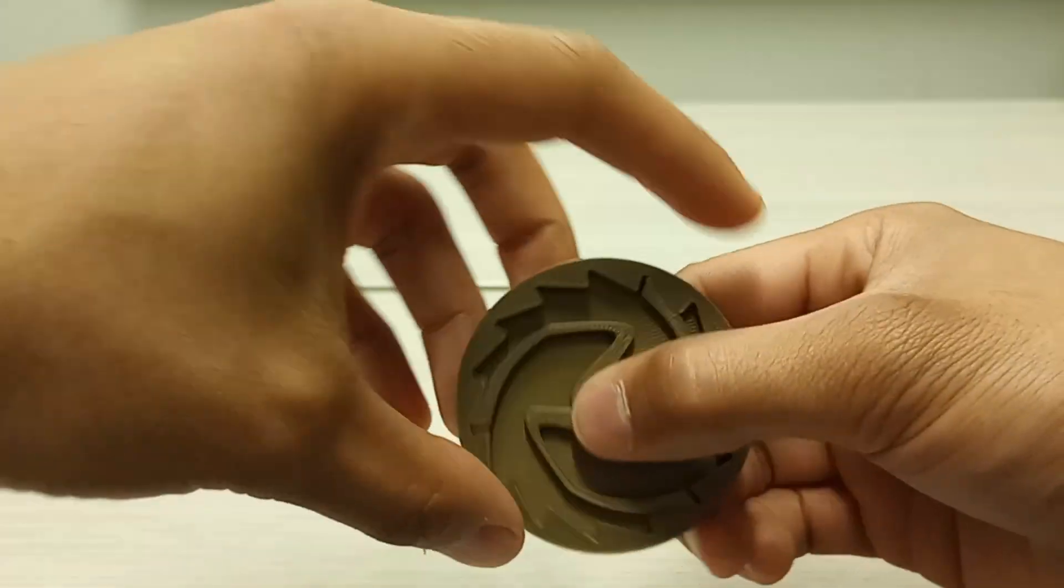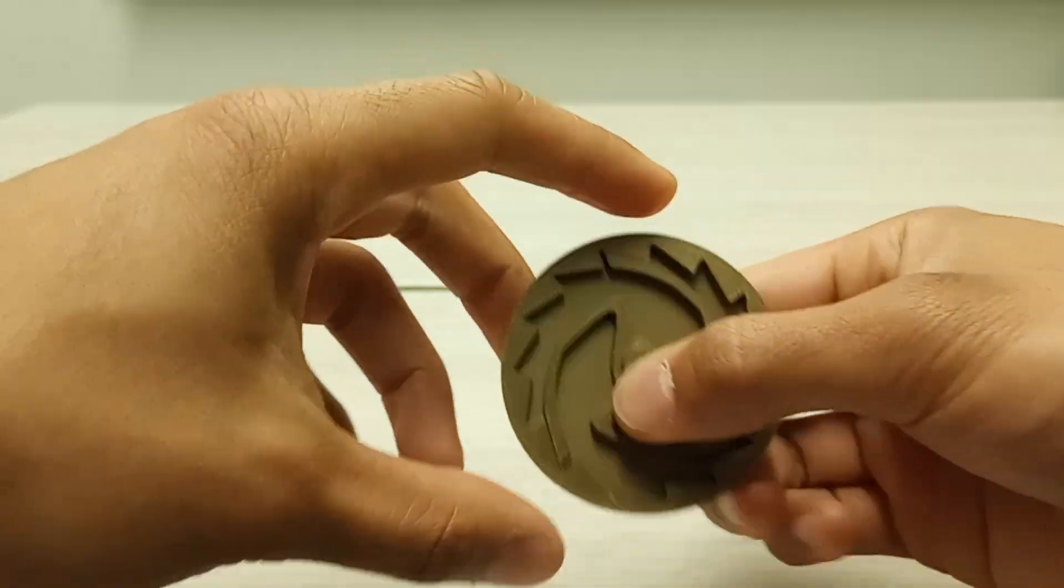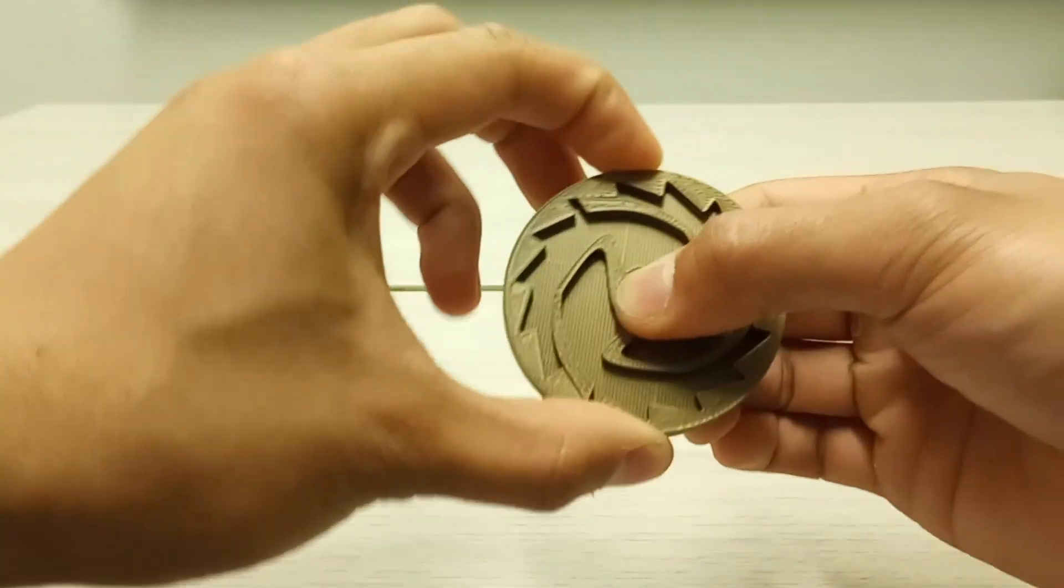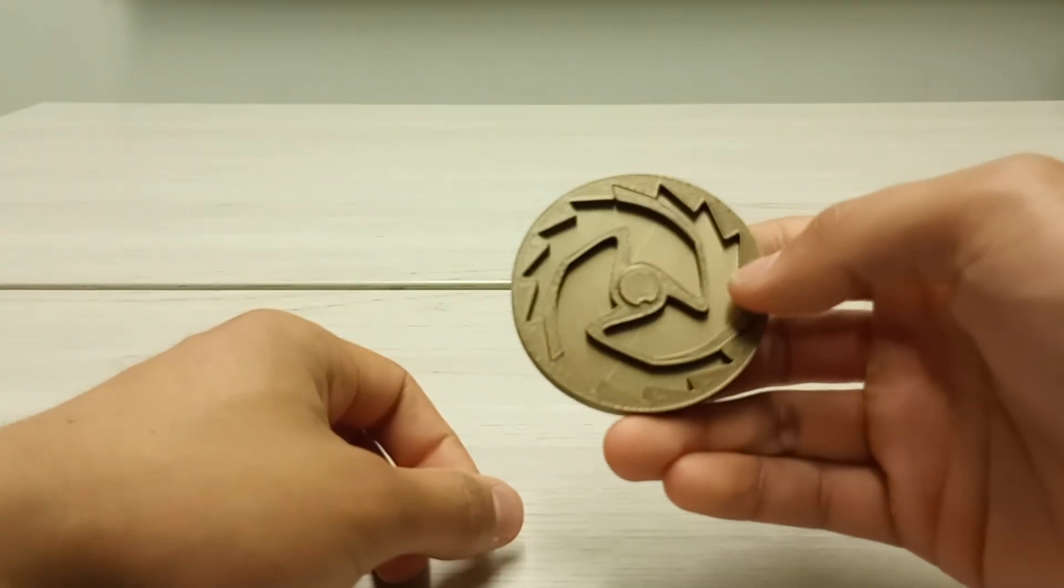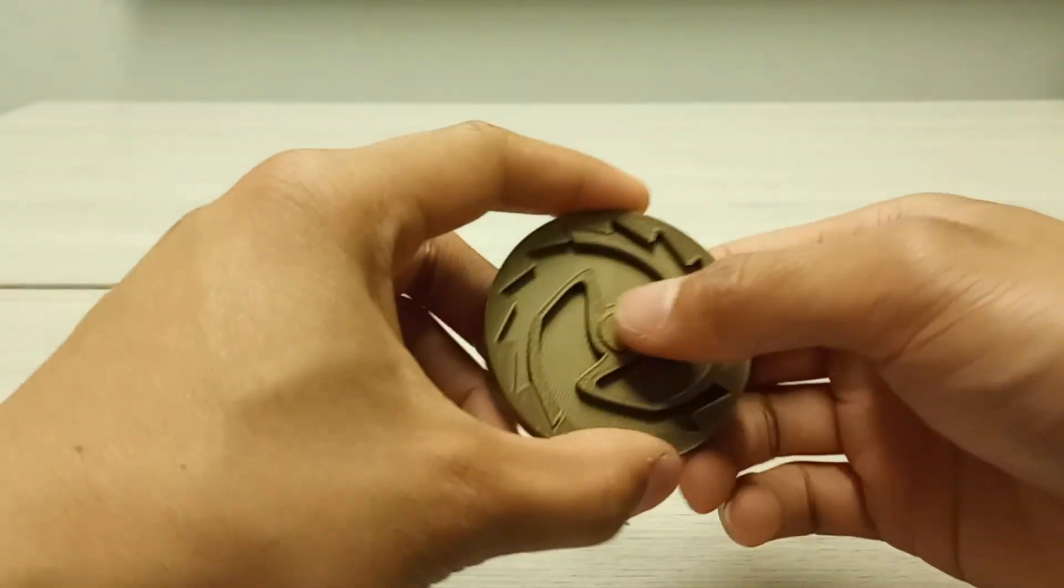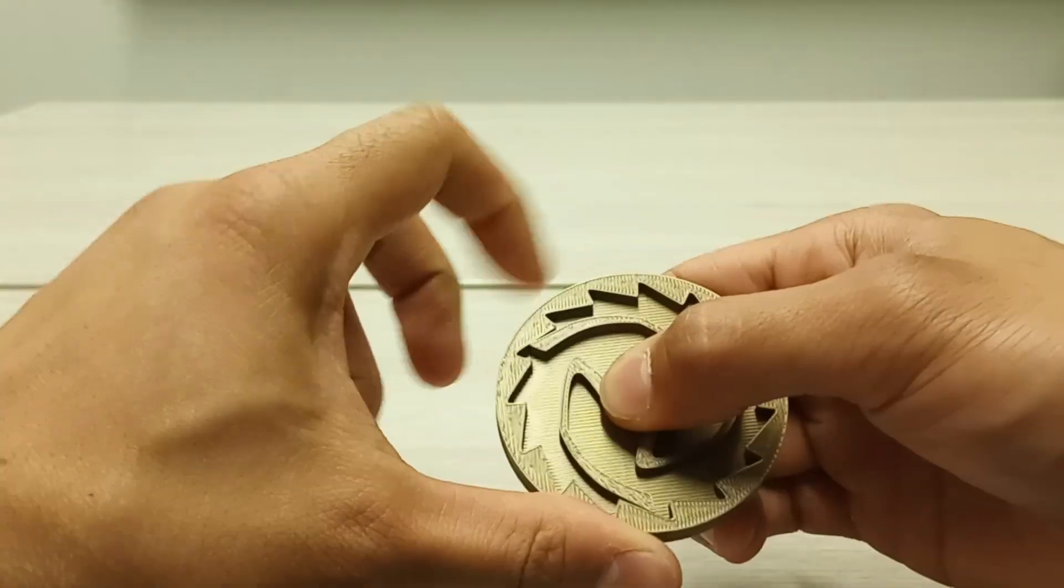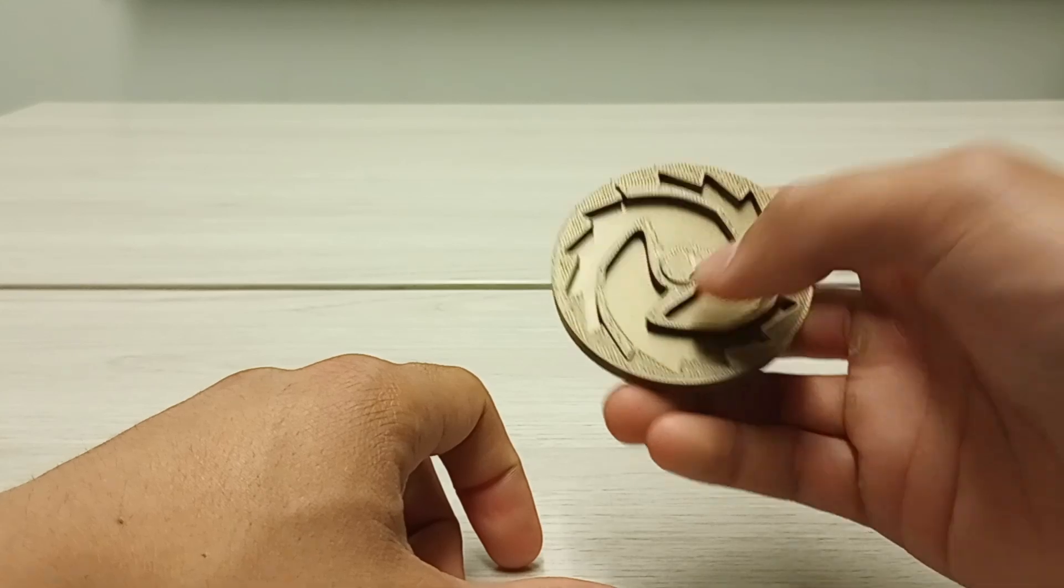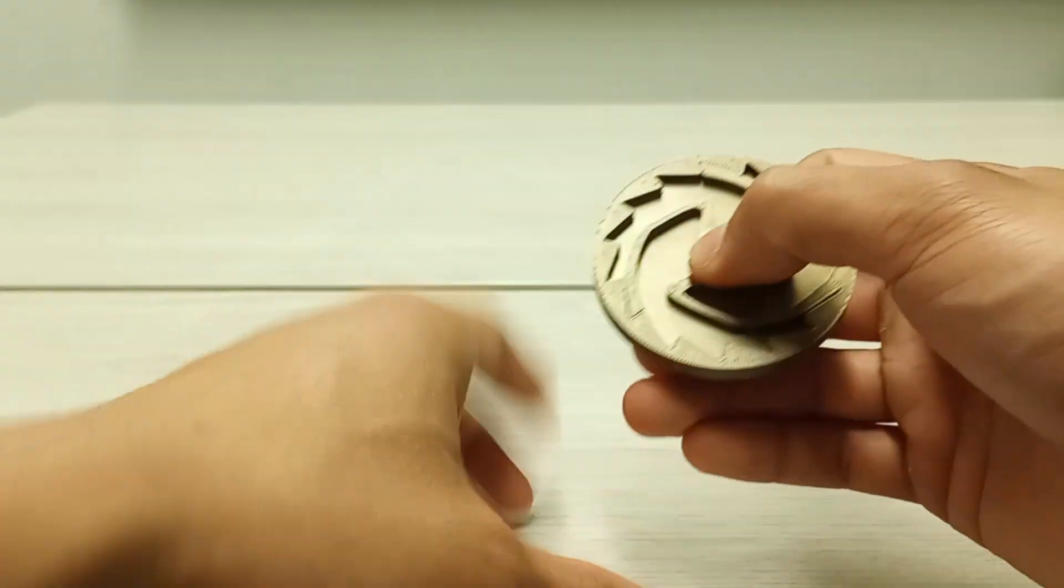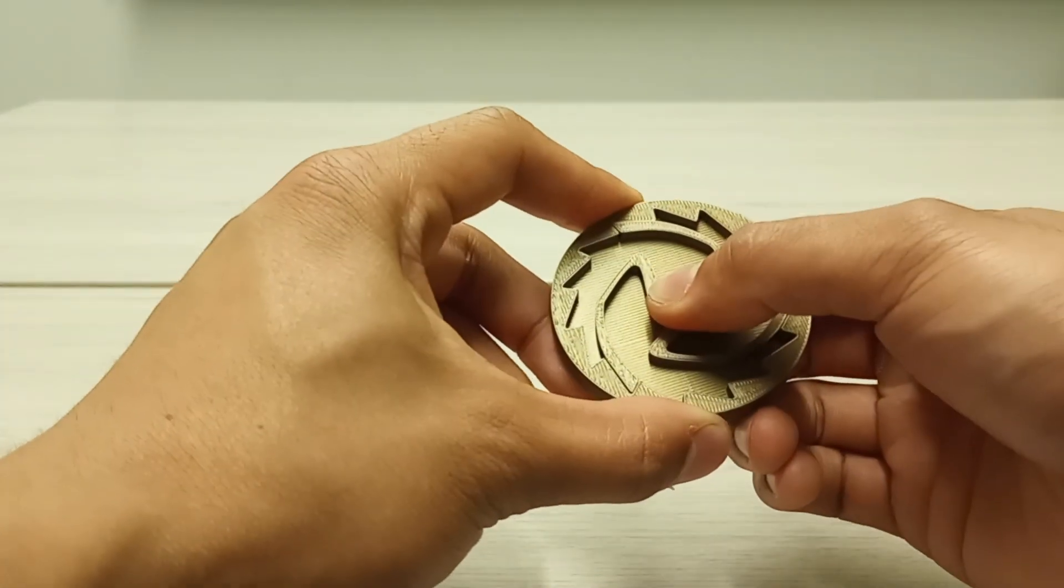This is the ratchet mechanism and as you can see it can only rotate in one direction. That is called being unidirectional and it's especially useful for applications such as ratchet wrenches that need tightening and cranking with ease of use.